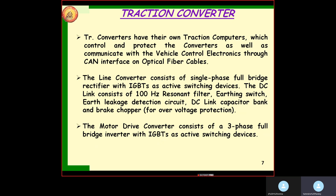Traction converters have their own traction computers which control and protect the converter, and also communicate with SV1 — the vehicle control electronics — through the CAN interface and optical fiber cable. The line converter is a single-phase full-bridge rectifier, IGBT-based. The DC link is a 100 Hz ripple filter which includes the air-thing switch, earth leakage circuit, DC link capacitor bank, and brake chopper. The motor drive converter is a three-phase full-bridge inverter, IGBT-based switching device.